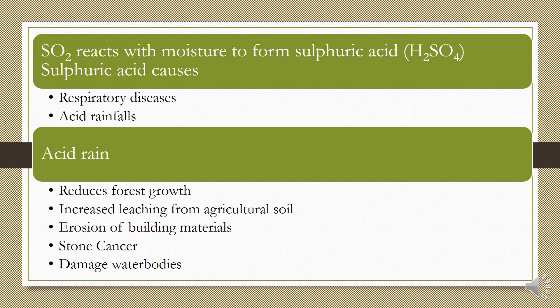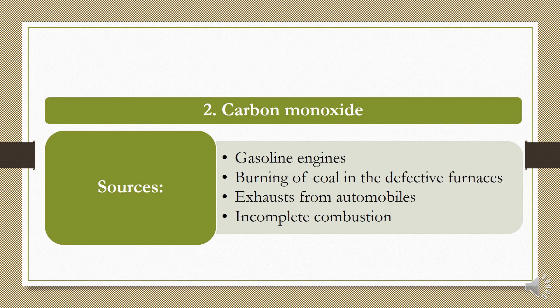SO2 reacts with moisture to form sulfuric acid (H2SO4), causing respiratory diseases. Acid rain from SO2 reduces forest growth and increases leaching from agricultural soil — the removal of important minerals — and can cause erosion of building materials (stone cancer) and damage to water bodies by reducing pH, harming aquatic inhabitants.